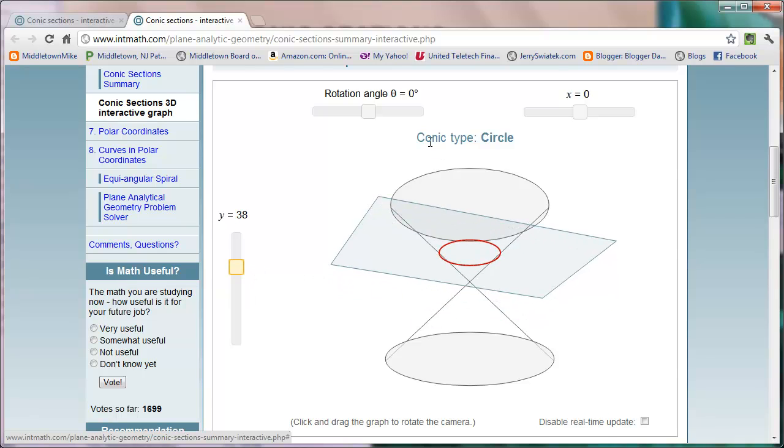As we tilt the plane, we can form the other shapes. So as we start to tilt, the circle now becomes an ellipse, and we can get different dimensions of the ellipse as we move our plane, both sliding the plane up and down and the tilt value.